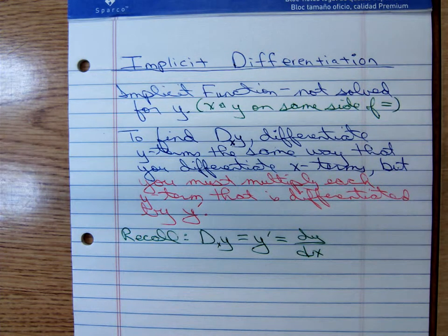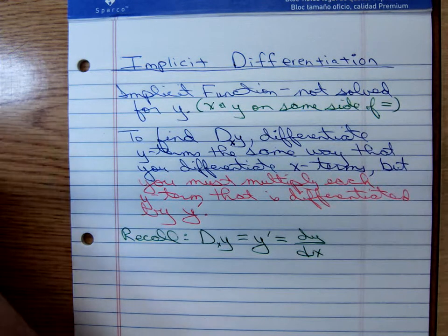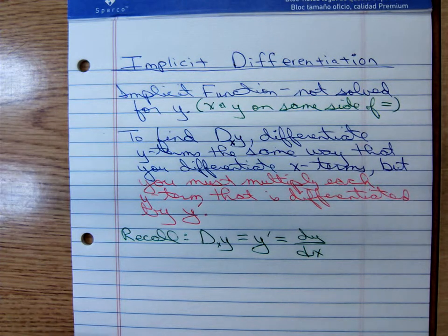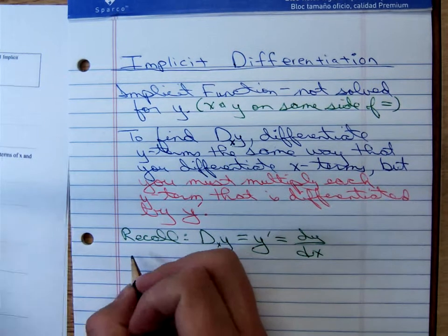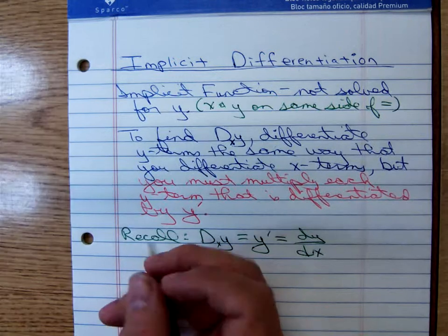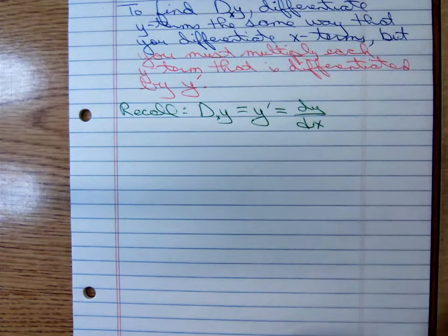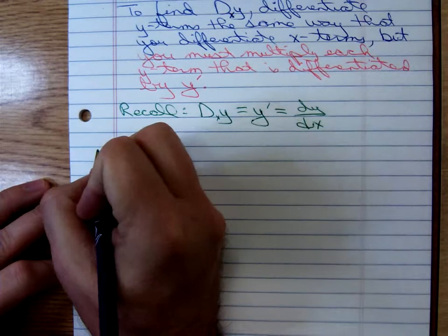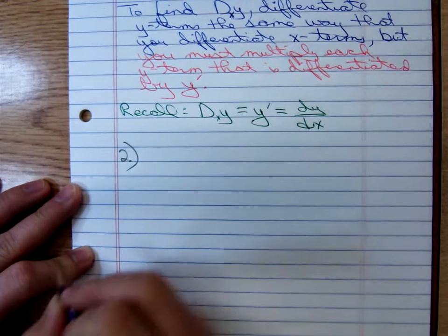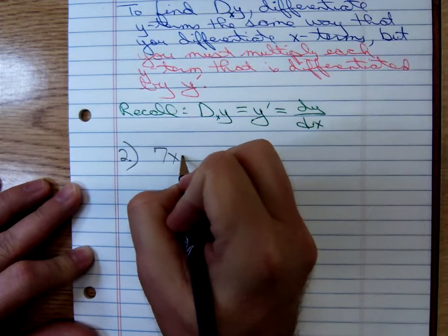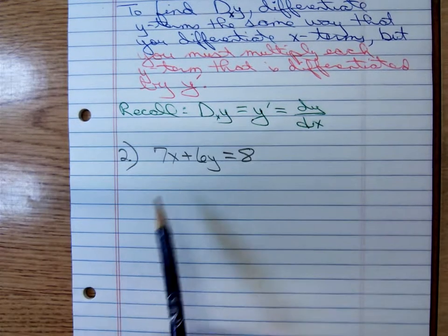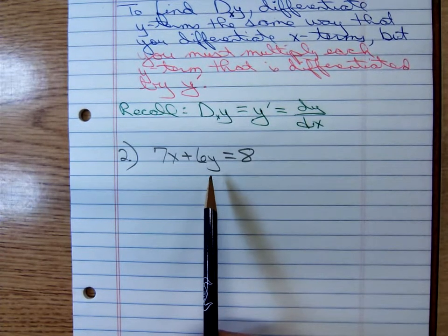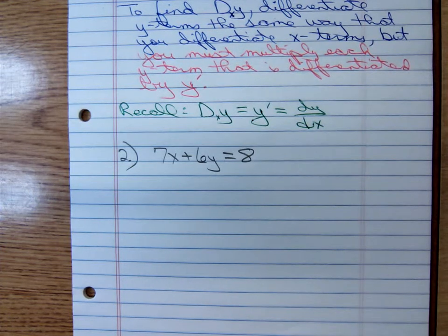To illustrate — this isn't as bad as it may sound — let's do number two. For the students in my class right now, this is number two in their homework. We have 7x plus 6y equals 8. Notice it's not solved for y. Well, this equation is easy to solve for y — it's a linear equation, we could get it in slope-intercept form.